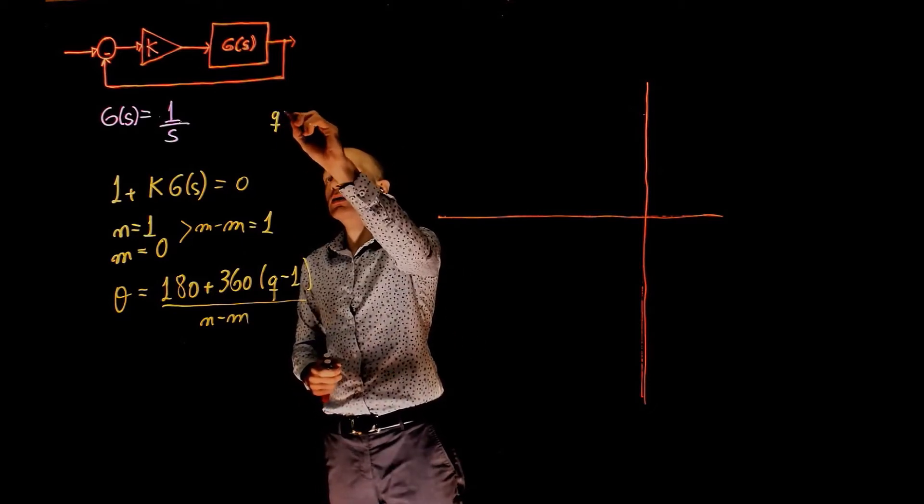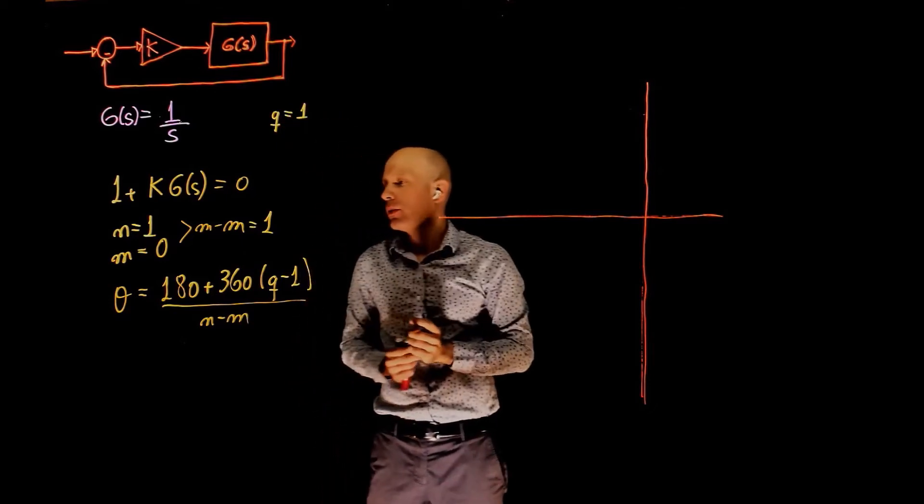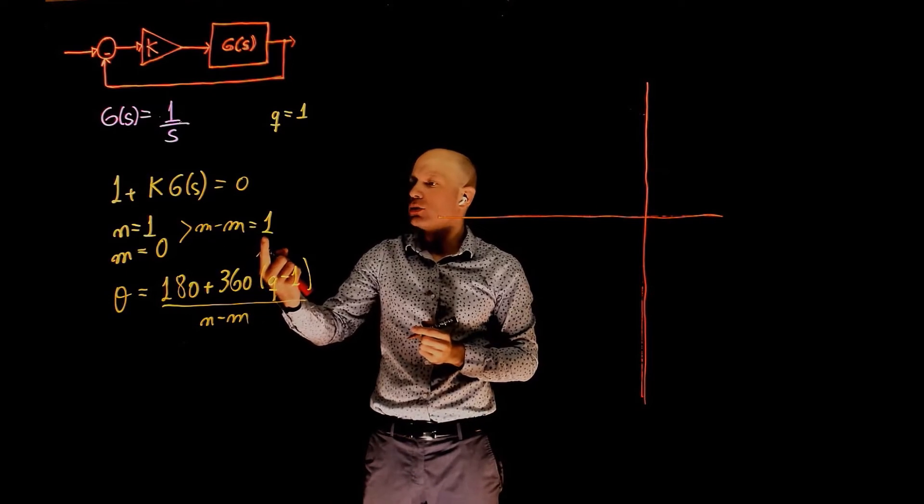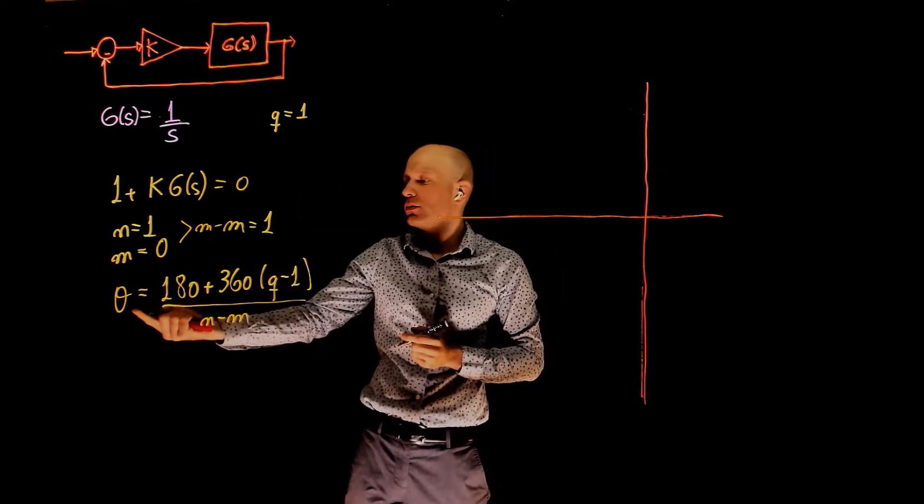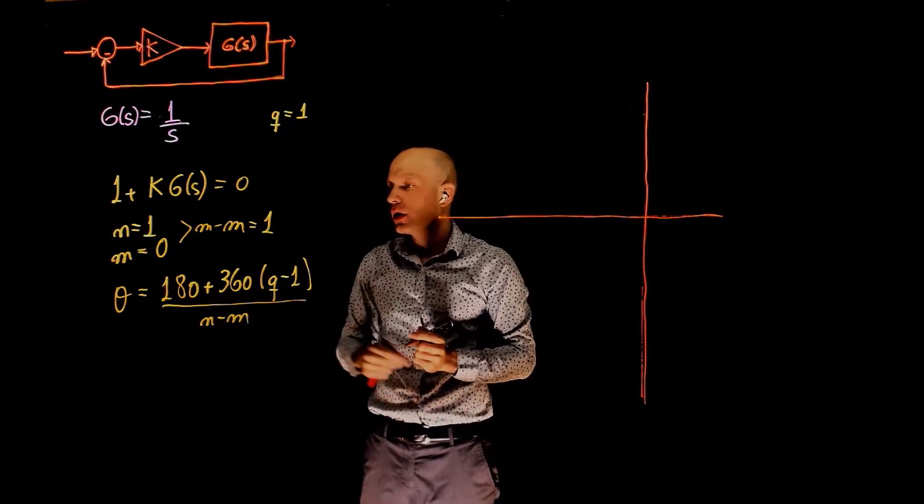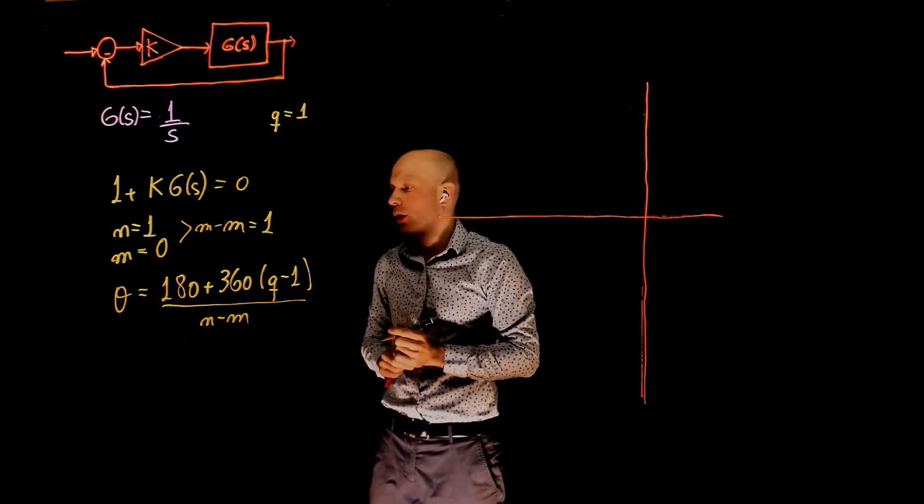So q in this case is simply 1. If you had n minus m equal to 2, then you have q equals 1 and q equals 2, and you would be able to calculate two angles. In this case, you only have one asymptote, so q equals 1.